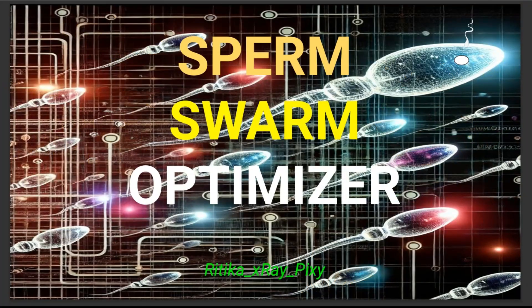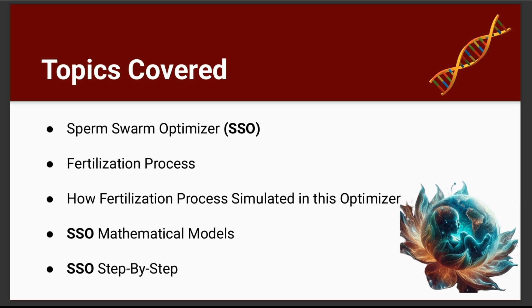Let's start. First, we will discuss the fertilization process in humans so we can understand how this algorithm works, how the fertilization process is simulated in this optimizer, and how different mathematical models are designed to simulate it. Then step by step we will discuss its working using different examples. First: what is the fertilization process?